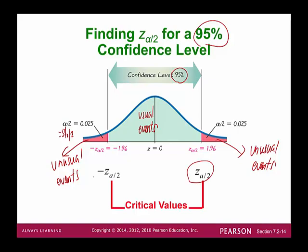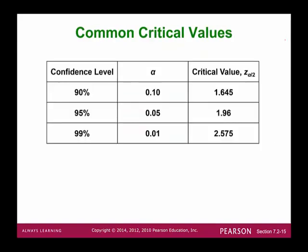Those two tail boundaries are called critical values: positive 1.96 and negative 1.96. You can find them from Table A2 on the second page, bottom right-hand corner. Common critical values: 90% confidence gives alpha = 0.10, critical value = 1.645. For 95% confidence, alpha = 0.05, critical value = 1.96. For 99% confidence, alpha = 0.01, critical value = 2.575.